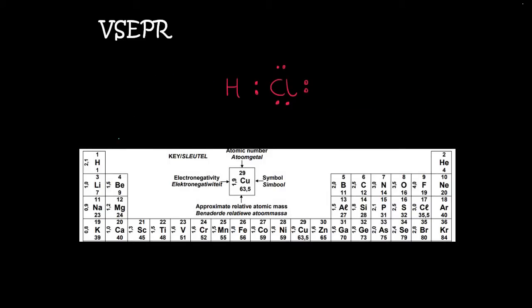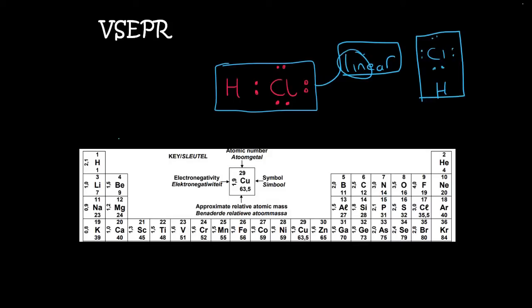Now we don't really have a central atom. But guys think about it. The only type of shape that those two could ever be is going to be called linear, meaning it's on a straight line. Because even if the H bonded down there, this is still going to be a straight line.